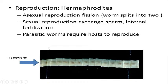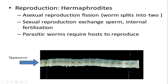These organisms are hermaphrodites. Asexual reproduction can occur by fission — the worm splits into two and two organisms are formed. For sexual reproduction, there is an exchange of sperm with internal fertilization. Ovaries and testes release ovum and sperm which fuse inside the body, so fertilization is internal. Two different worms come together; self-fertilization does not occur.